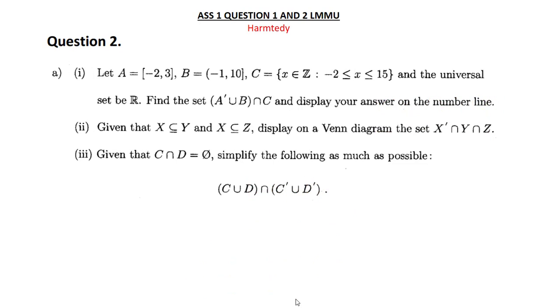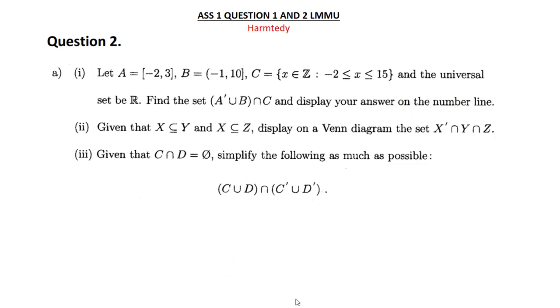The next question says: let A = {-2, 3}, B = that set, and C = that set. Let us list C before we start solving. Actually, let's cut here and solve question two in the next video — so see you in the next video, make sure you subscribe.